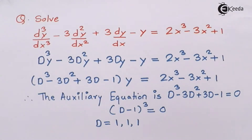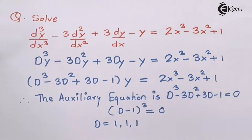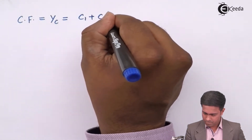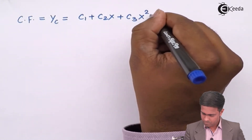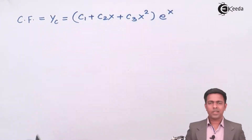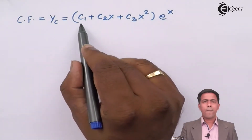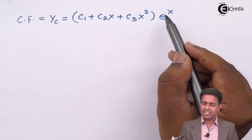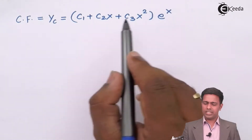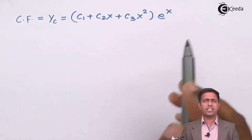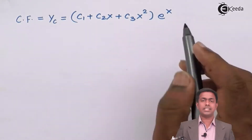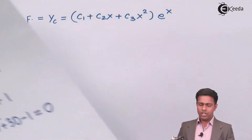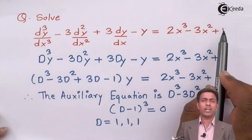So in this case the complementary function is given by taking three constants c1, c2, c3 where 1 is the repeated root. So we get c1 plus c2 x plus c3 x squared, all multiplied by e to the power x. This we have seen in the previous video; if you don't know how we got this, you need to go back and revise that video. So here we have the complementary function for this given linear differential equation.